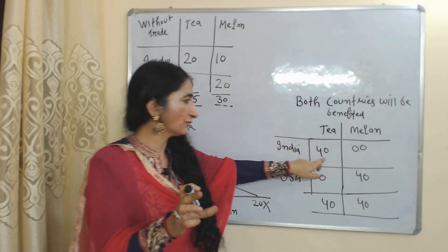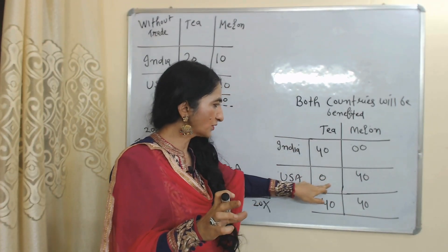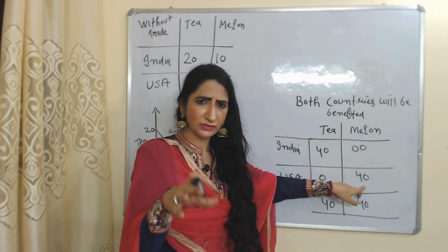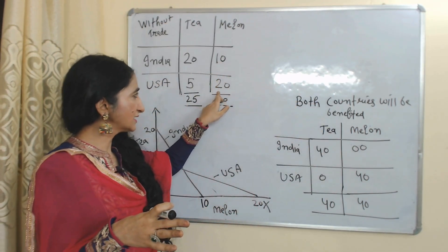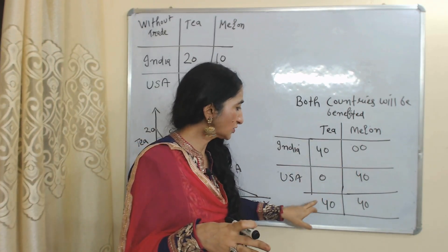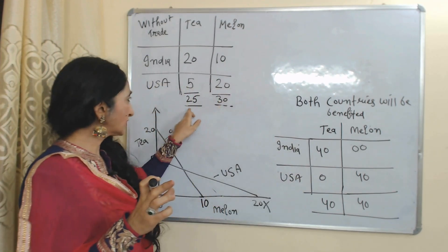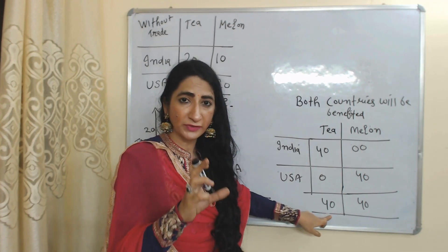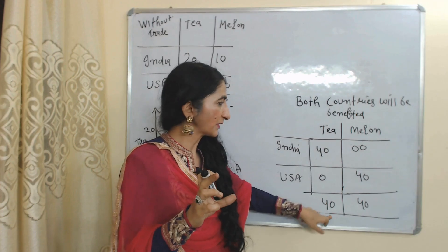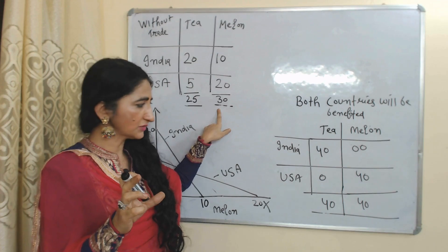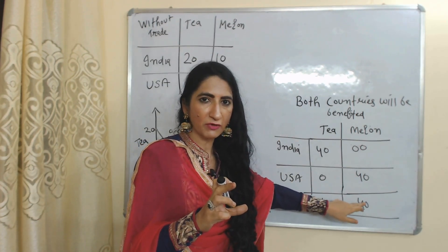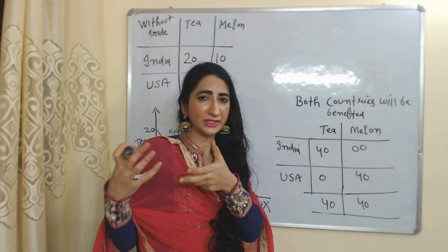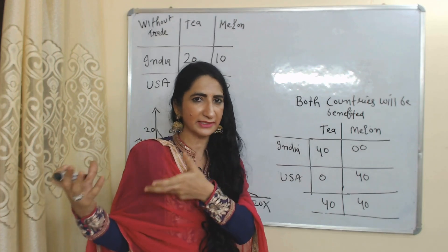USA stopped production of tea because USA has absolute disadvantage in tea, and is now using all 16 hours of labor in production of melon, so production of melon has increased from 20 units to 40 units. Total production of tea after trade has increased from 25 units to 40 units, and total production of melon has increased from 30 units to 40 units. So total production has increased because we are doing trade according to absolute cost advantage and disadvantage, meaning both countries are benefited.